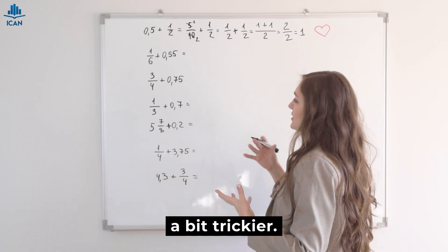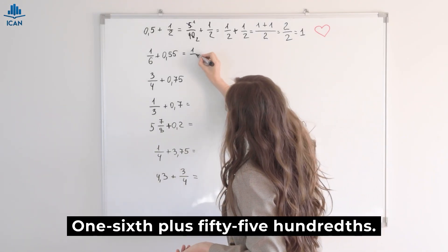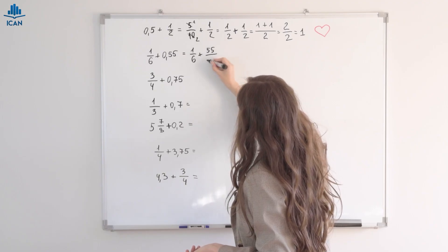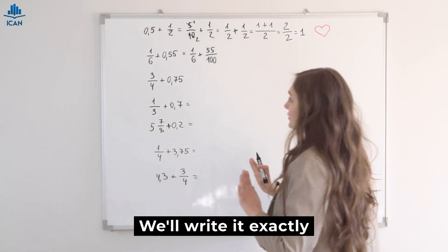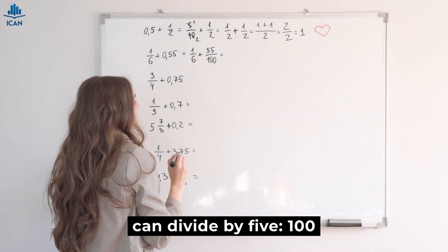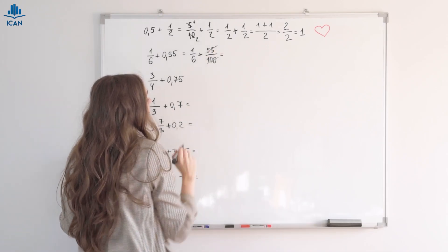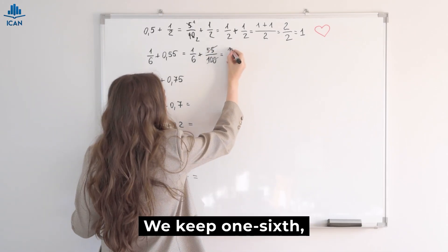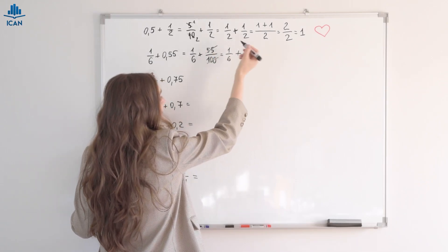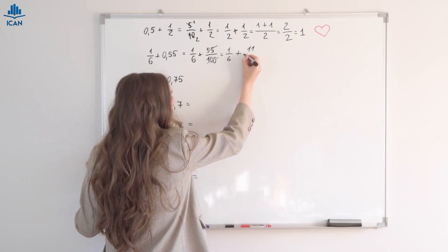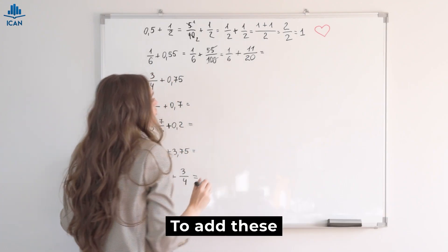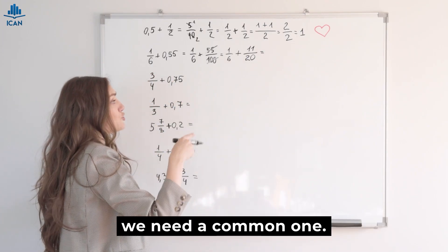The next example is a bit trickier. One-sixth plus fifty-five-hundredths. We'll write it exactly as we see it. Equals, we can divide by five. We keep one-sixth, then add fifty-five divided by five, which is eleven. And one-hundred divided by five is twenty. To add these fractions with different denominators, we need a common one.